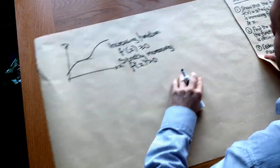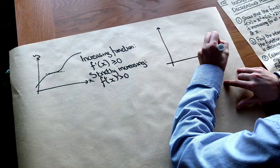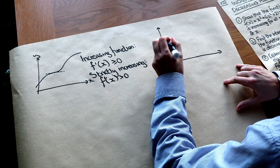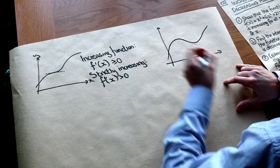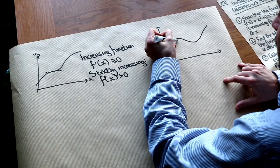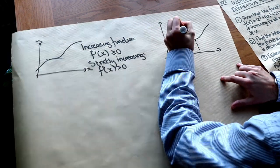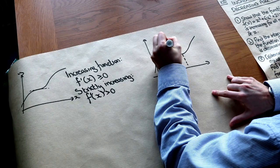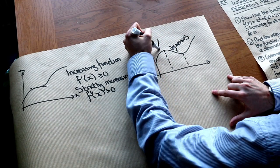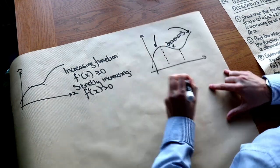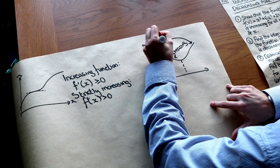It might be that the function is increasing only in a particular interval. For example, if we take a cubic like this, we can see that in this middle region the function is decreasing because the gradient is negative, whereas in the two outer regions the function is increasing because it's going uphill.